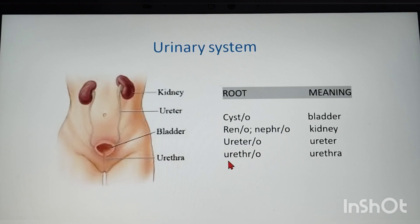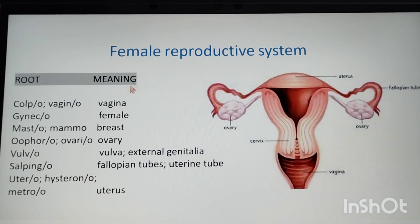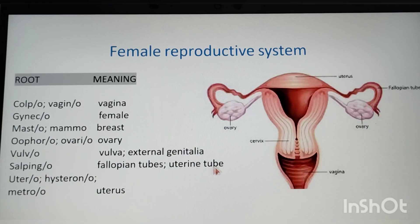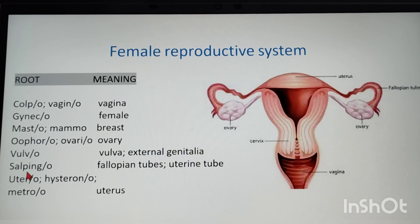Next is the female reproductive system: colpo/vagino — vagina; gyneco — female; masto/mammo — breast (mastectomy means removal of the breast); oophoro/ovario — ovary; vulvo — vulva/external genitalia; salpingo — fallopian tubes/uterine tubes; utero/hystero/metro — uterus (three terms describe the uterus).